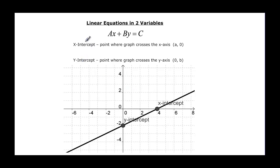Intercept sounds like when you cross something, so the x intercept is when it crosses the x axis — that would be this point right here. We go across to the x value, but we don't go up or down, so it's always going to look like some number and zero, meaning y is equal to zero.